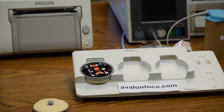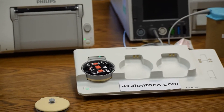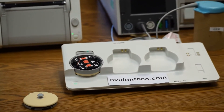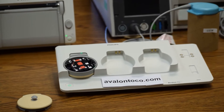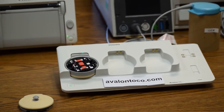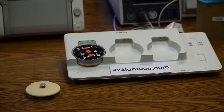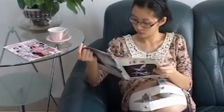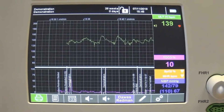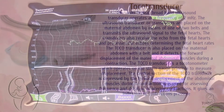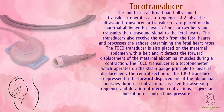A TOCO dynamometer, or TOCO for short, is a transducer pressure sensing device that can detect the changes in your abdomen as the uterus tightens during a contraction. It marks how often contractions occur and the length of each, producing a graph that looks like a series of hills rolling across the bottom of the printout.